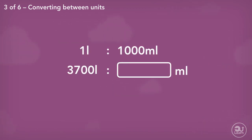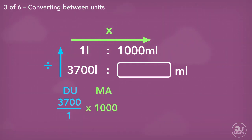Now we convert 3,700 litres to millilitres. 3,700 litres divided by 1 multiplied by 1,000, which gives us 3,700,000 millilitres.